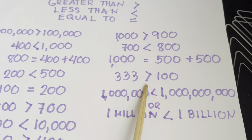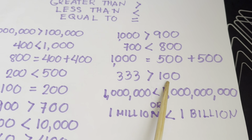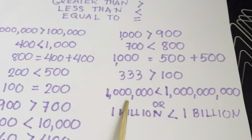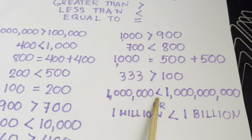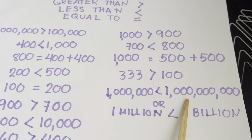Next, three hundred thirty-three is greater than one hundred. One million is less than one billion.